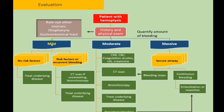The management algorithm for mild, moderate, and massive haemoptysis: if no risk factors, treat the underlying cause. If risk factors present or recurrent bleeding, investigate with CT scan and bronchoscopy, then treat the underlying condition. For moderate bleeding: X-ray, CBC, laboratory parameters, CT scan, bronchoscopy, identify and treat the cause. For massive haemoptysis: secure the airway, stop the bleeding; if continuous bleeding, go for endovascular treatment such as embolization or surgical resection.